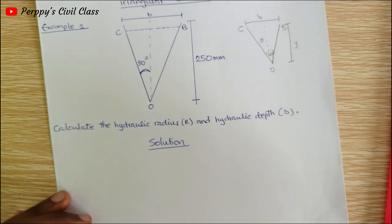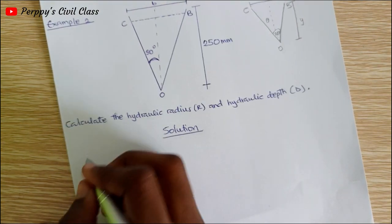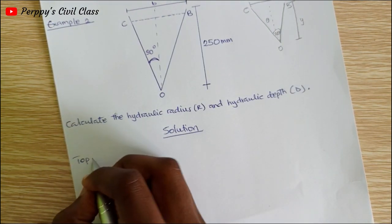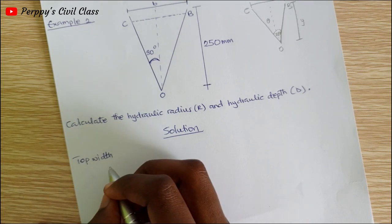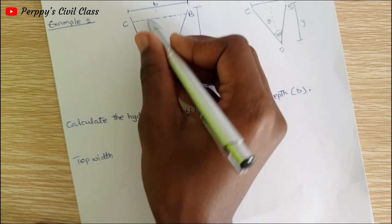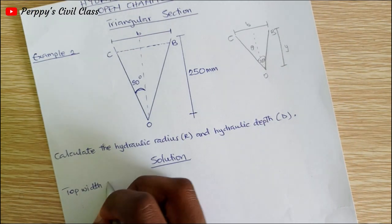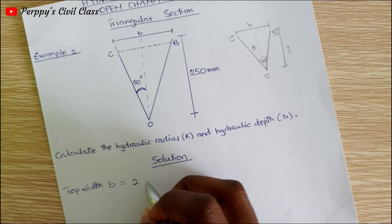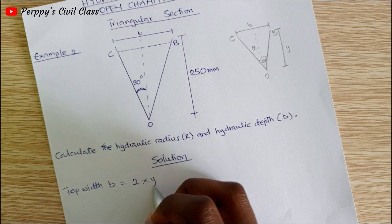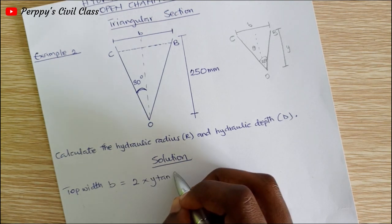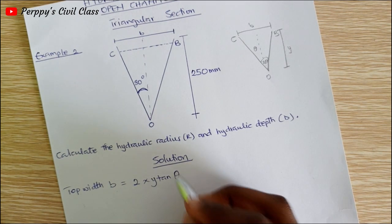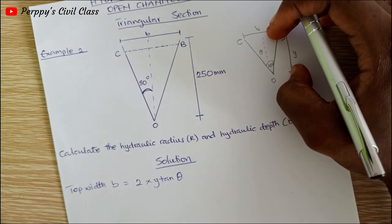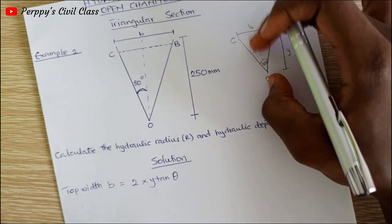Solution: calculating for our top width b, our top width b is equal to two times y tan theta, where theta is the angle for this section.